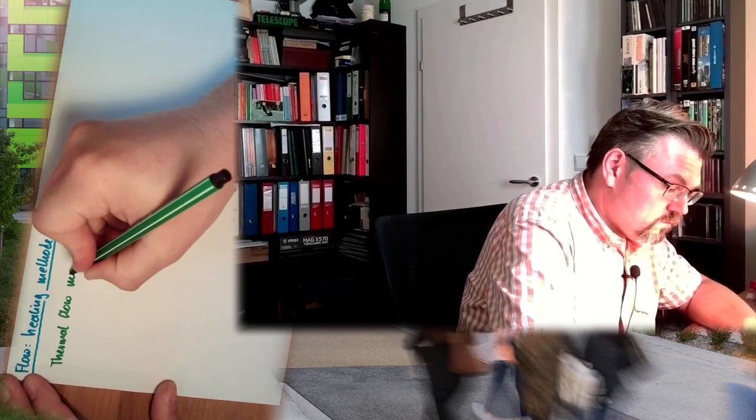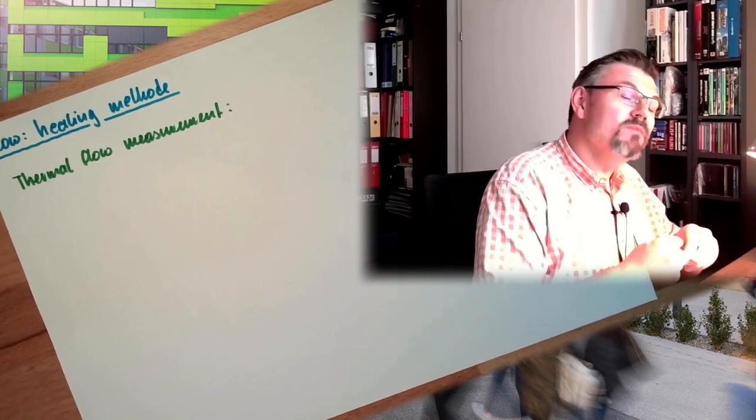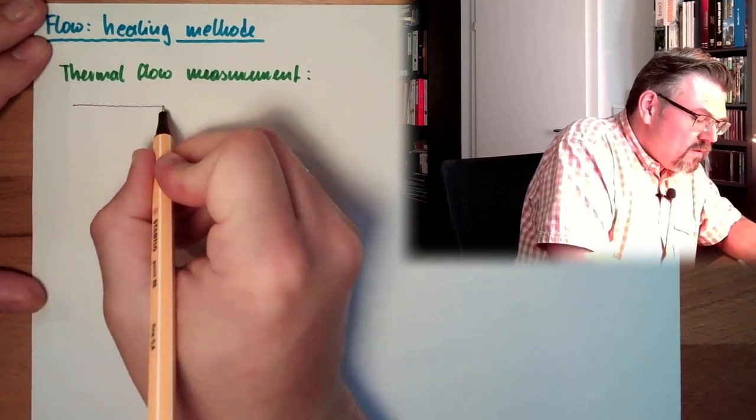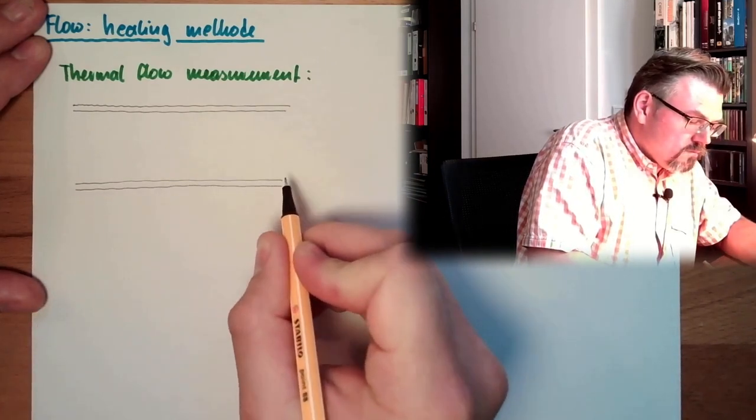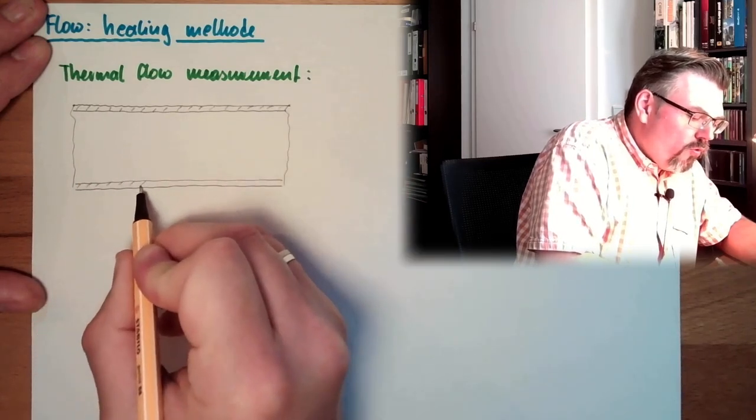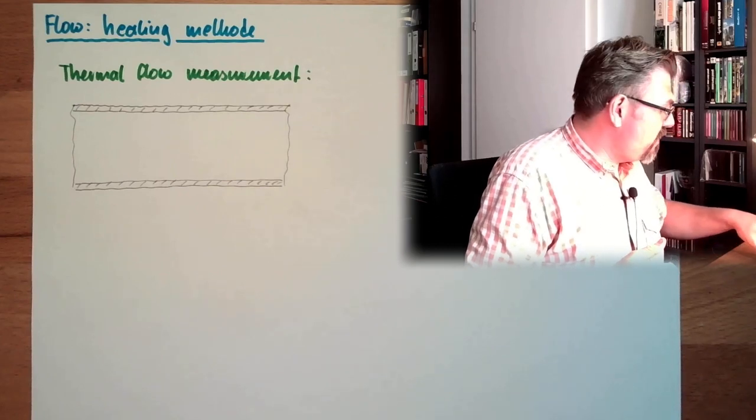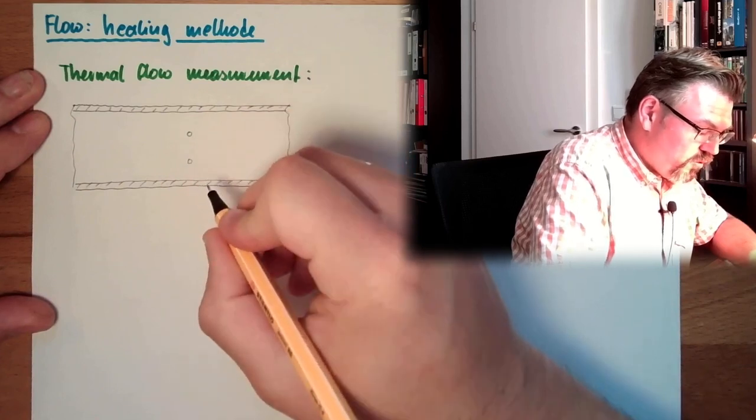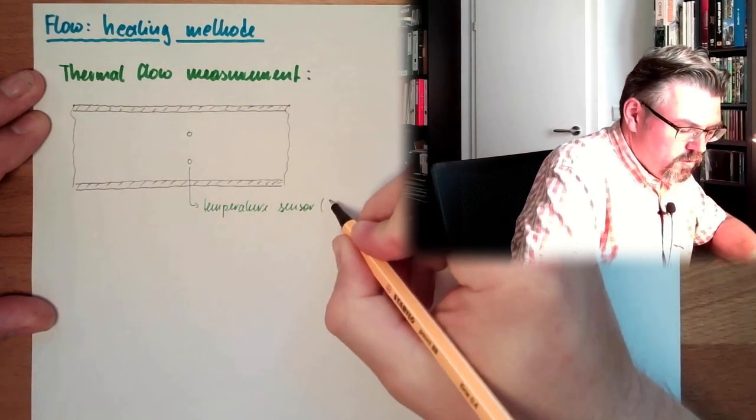Let's first have a look at the thermal flow measurements. So we again have a tube or something like this where our medium is flowing. It can be liquids, it can be gases. And inside this tube I am placing two thermal measuring points, two usually PT100. We talked about temperature measurement. So we have here a probe, another probe, temperature sensor probes, usually PT100.